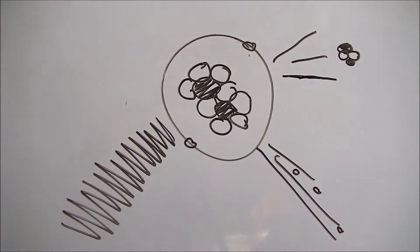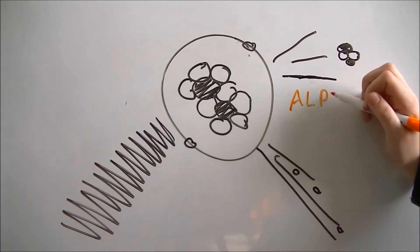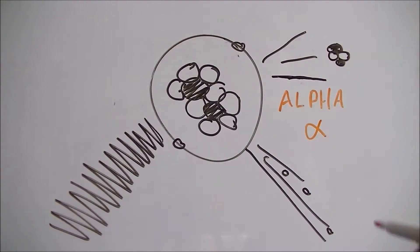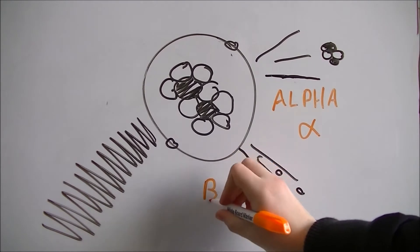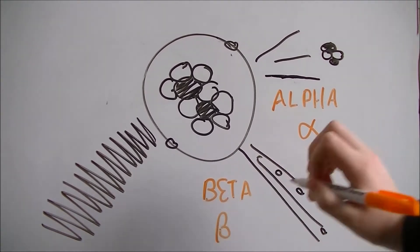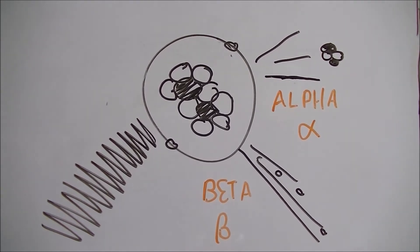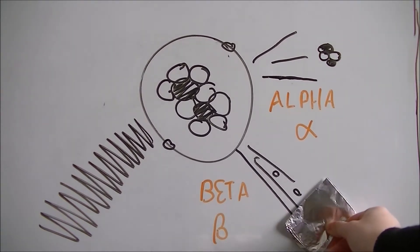There are three types of radiation. Alpha, which is the least dangerous and consists of emitting two protons and two neutrons, essentially changing the element. Then there is beta radiation, which is when the atom shoots electrons at a fast pace. This can go through your skin and cause damage but can be stopped by a sheet of aluminum.